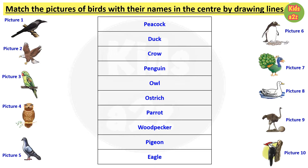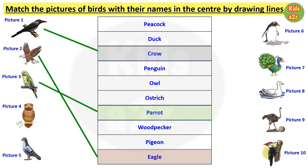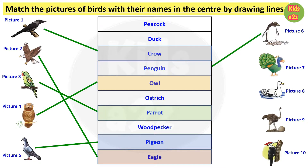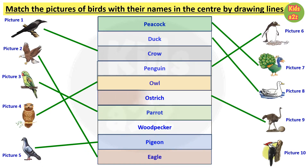So here we need to match picture 1 with crow, then picture 2 with eagle. Picture 3 is parrot. Picture 4, owl. Picture 5, pigeon. Picture 6, penguin. Picture 7, peacock. Picture 8, duck. Picture 9, ostrich. And picture 10, woodpecker.